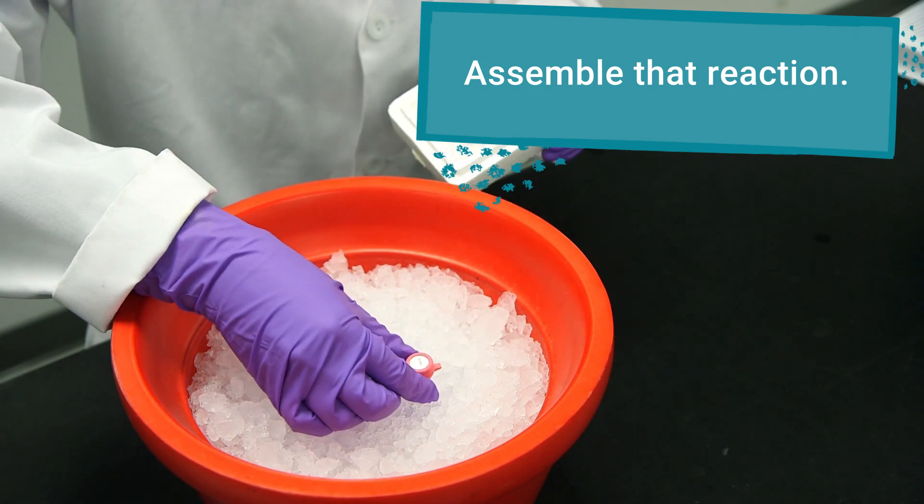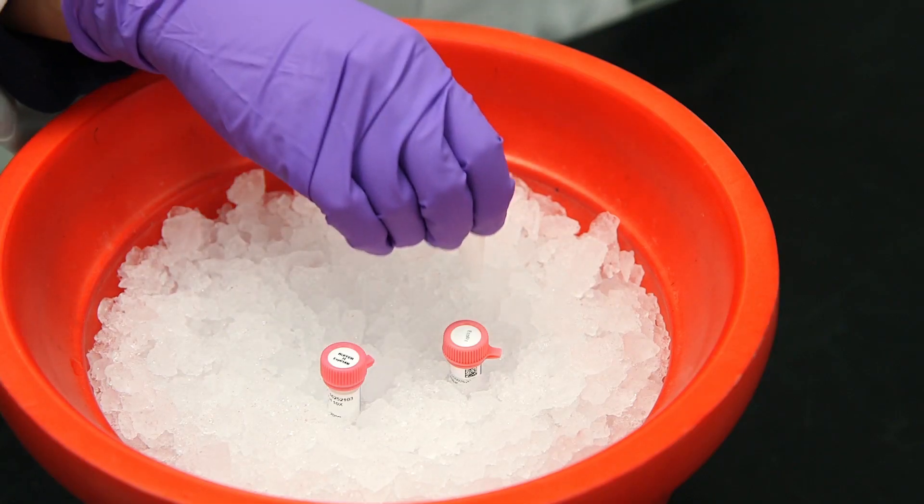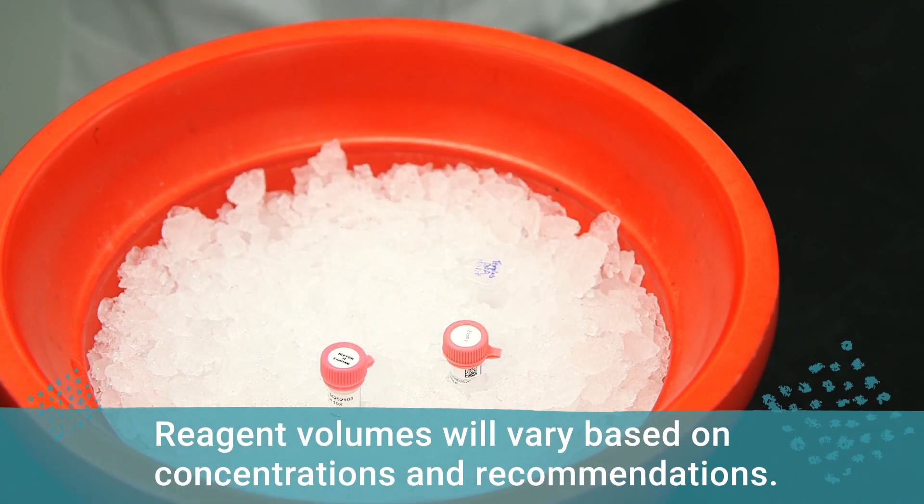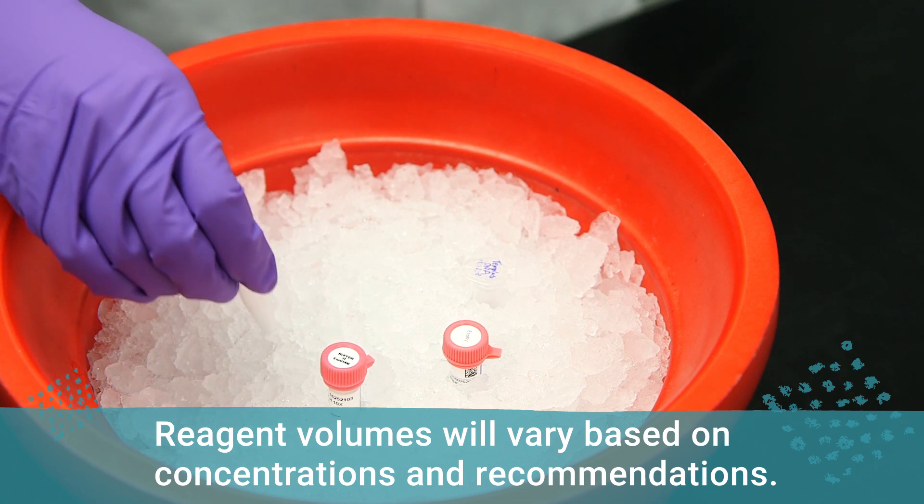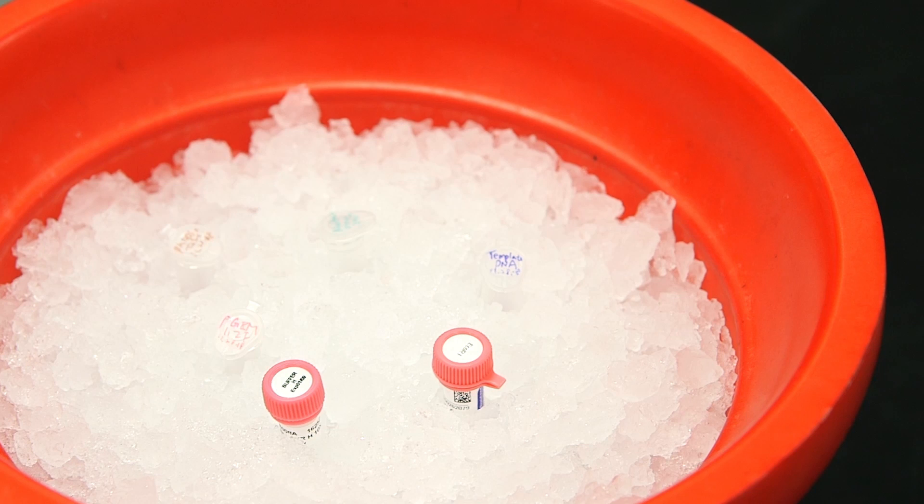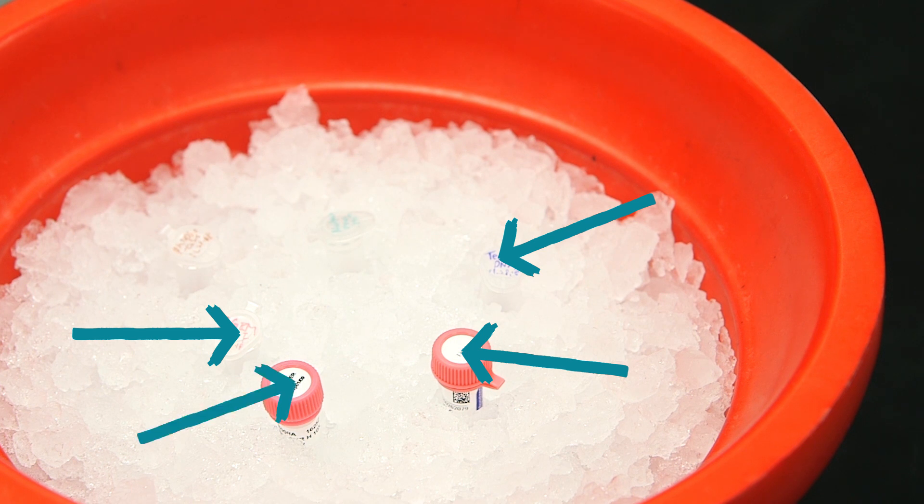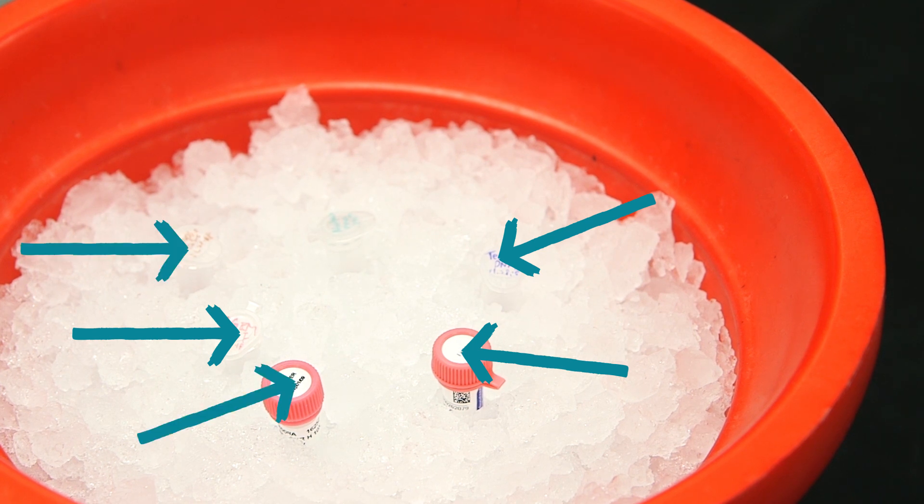Once you have your enzymes picked out, you can assemble your reaction. The exact volumes of each reagent will vary based on concentrations and manufacturer recommendations. But the typical digest contains template DNA, recipient plasmid, your enzyme or pair of enzymes, the buffer recommended by the manufacturer, and nuclease-free water.